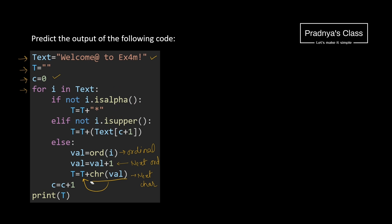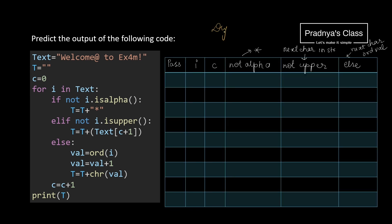Hope you got a little idea of the code. Now let's draw the dry run table and check out the values in each pass. Let's start with the first pass. The value of I will be W. Initially C is zero. We know that W is an alphabet, so it will not pass the first criteria. The next condition is 'not upper' — but W is an uppercase letter, so this condition is also not satisfied. Ultimately we come to the else part.